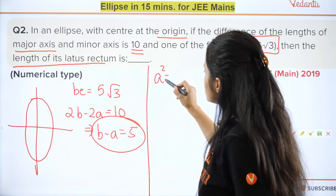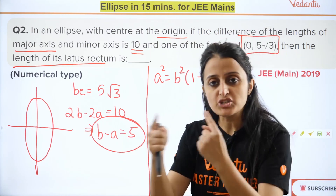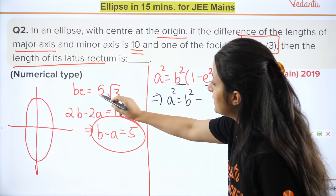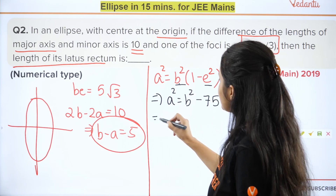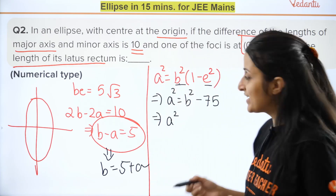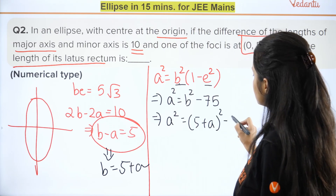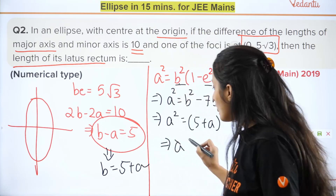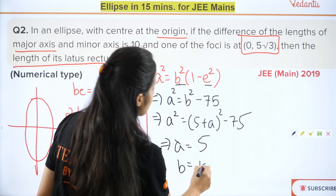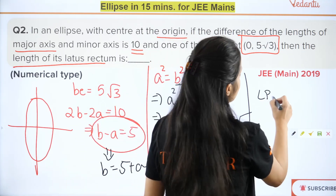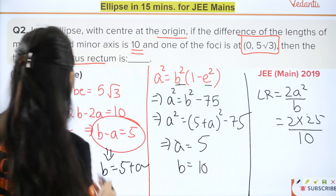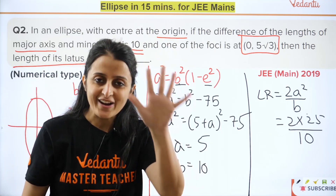We need to find the length of the latus rectum, so again it's all about a and b. Using the relation (with a and b exchanged for vertical ellipse): b² − b²e² = 75. Since b = 5 + a, substitute and simplify to find a. After solving: a = 5, therefore b = 10. Length of latus rectum for vertical ellipse is 2a²/b — substituting gives 5 units as the answer.